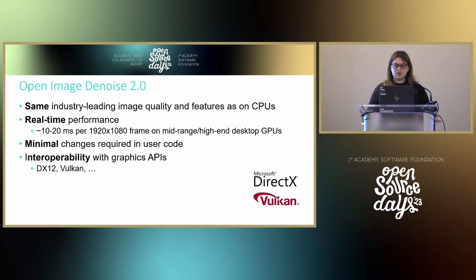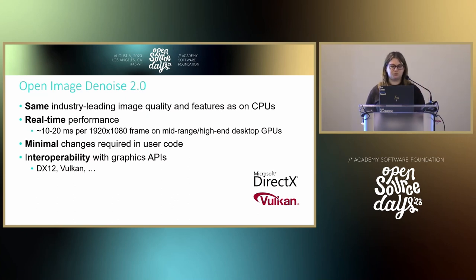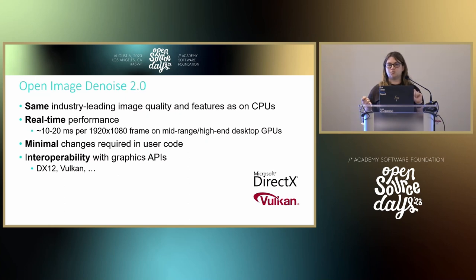We kept our image quality and features. We're getting real-time interactive performance of about 10 to 20 milliseconds per 1920×1080 frame on a mid-to-high-end desktop GPU. There are minimal changes to your code, and also interoperability with graphics APIs — DirectX 12, Vulkan — and we're going to have even more efficient support coming up next for Texture Interop.